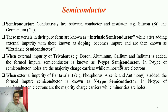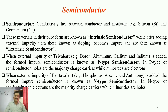You are already familiar with the term semiconductor — it is a material whose conductivity lies between that of a conductor and an insulator. The best examples from the periodic table are silicon and germanium, whose conductivity can be changed. These materials in their pure form are known as intrinsic semiconductors, while after adding external impurity — known as doping — they become impure and are called extrinsic semiconductors.